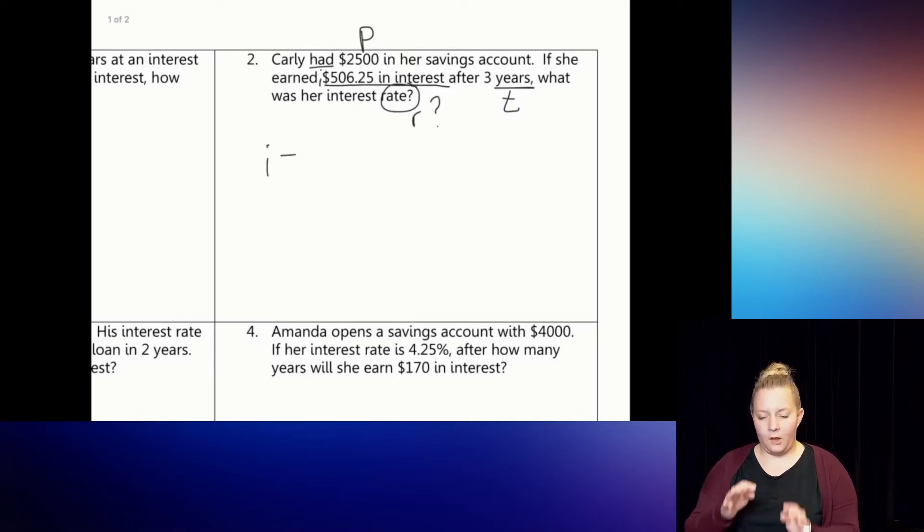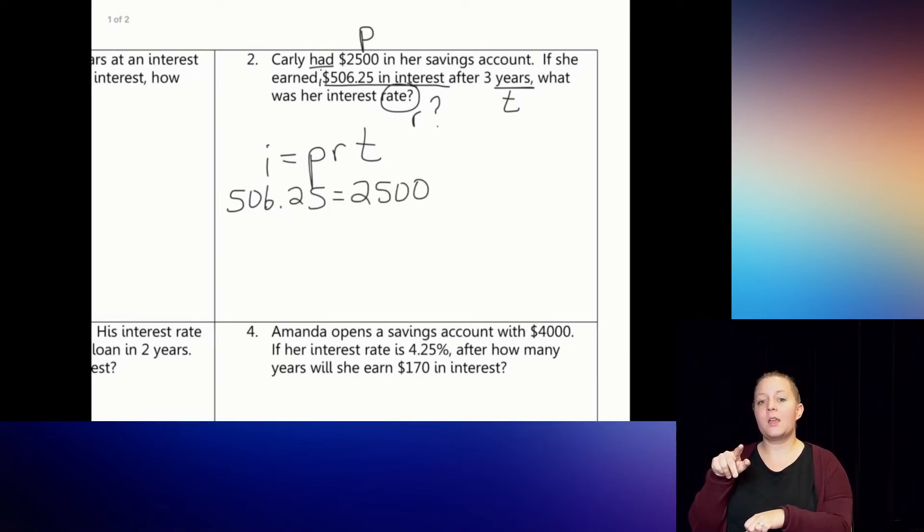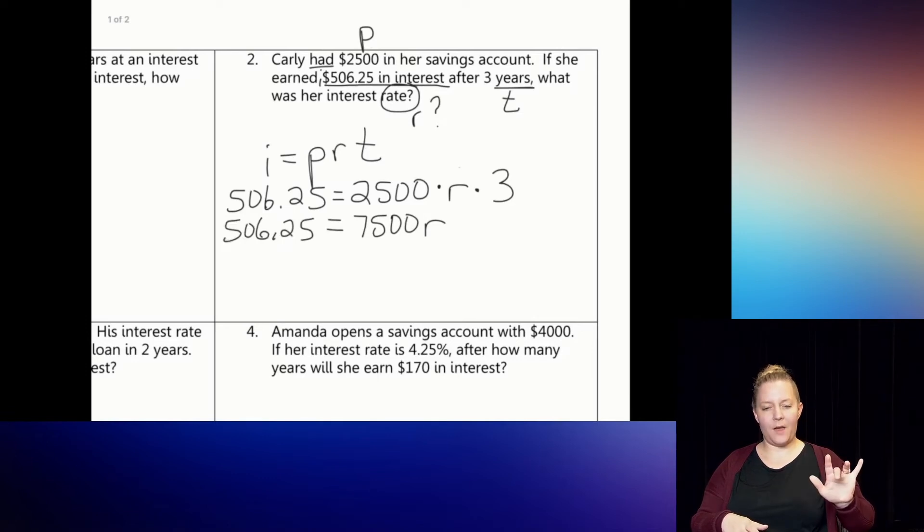Alright, let's write our formula. I equals PRT. I, interest. They told us that that was $506.25. Equals, this time I can fill in my P, my principal. I know that that's $2,500. Times the R, we do not know. We don't know the interest rate, so I'm leaving that there. Times the T, which is three. Well, I cannot multiply them in order, but I can use my commutative property to switch these two around, so that I can just multiply the $2,500 times the three. And when I do that, I get $7,500, and then I'll hook the R right on to show that that still needs to be multiplied.